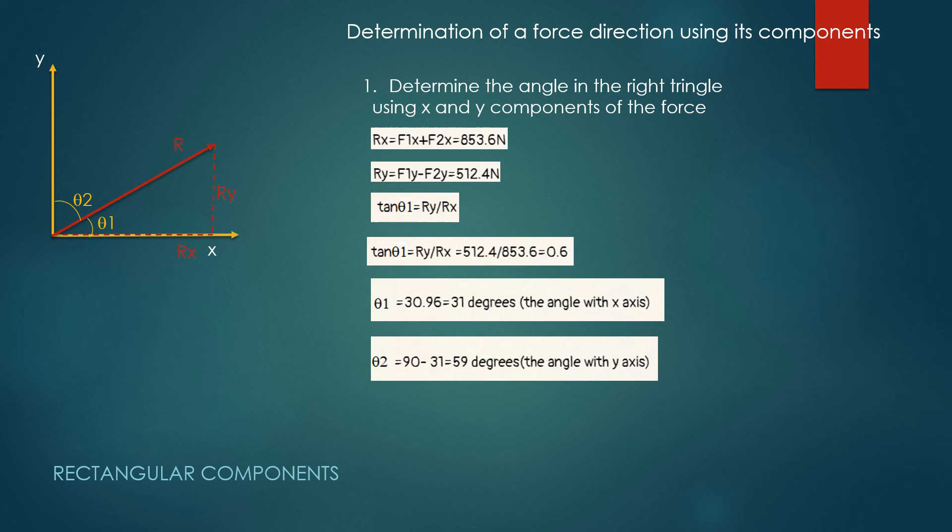The angle of resultant force with regard to the y-axis is shown on the left. The resultant force is 995.6 newtons acting at an angle of 31 degrees with regard to the x-axis.